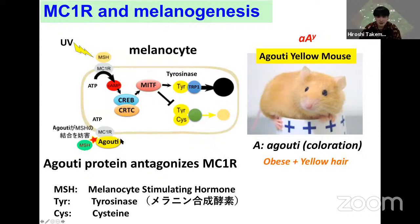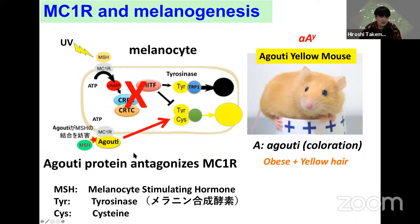How does agouti regulate hair color? MSH binds to MC1R, activates cyclic AMP and CREB signaling, upregulates MITF transcription. MITF with tyrosinase and TRP1 produces black melanin. However, agouti protein blocks MC1R function and downregulates MITF gene transcription. This downregulates tyrosinase activity, lowers melanin content, and promotes conjugation with cysteine. This enzyme activity produces yellow melanin. This is the mechanism by which agouti overactivation causes yellow hair.